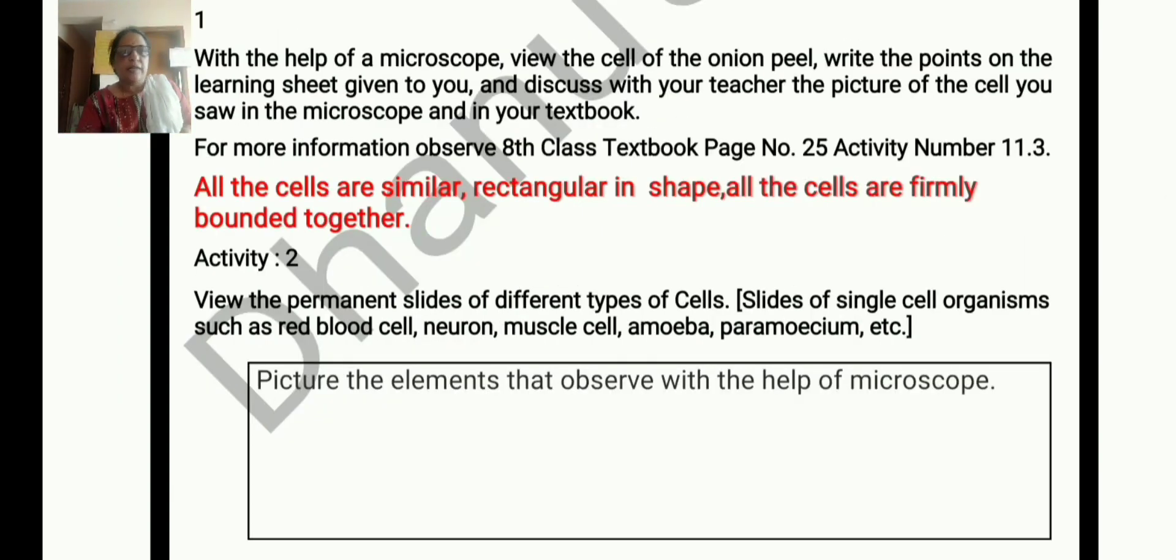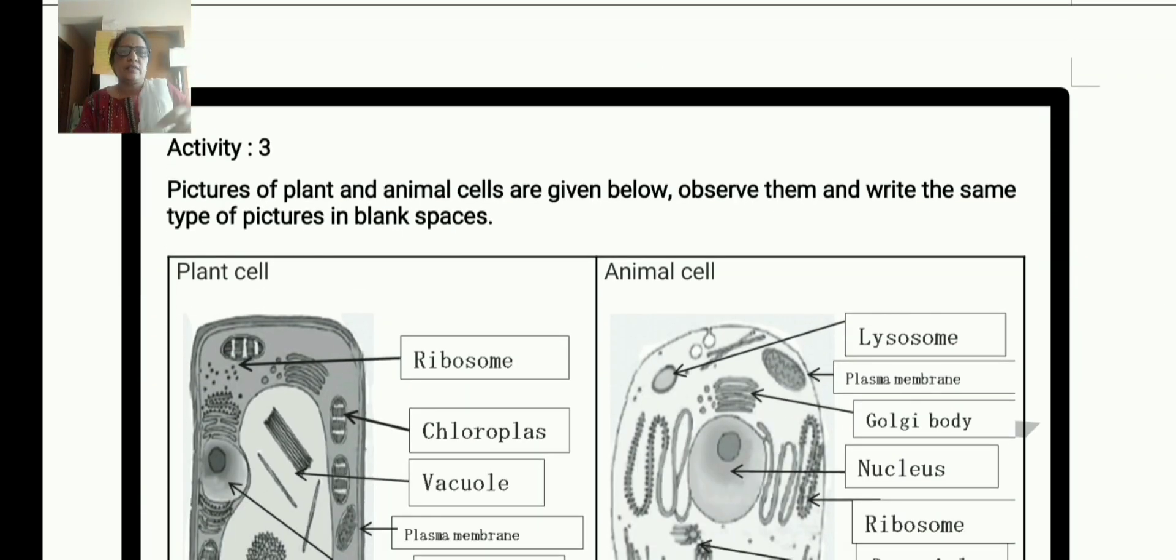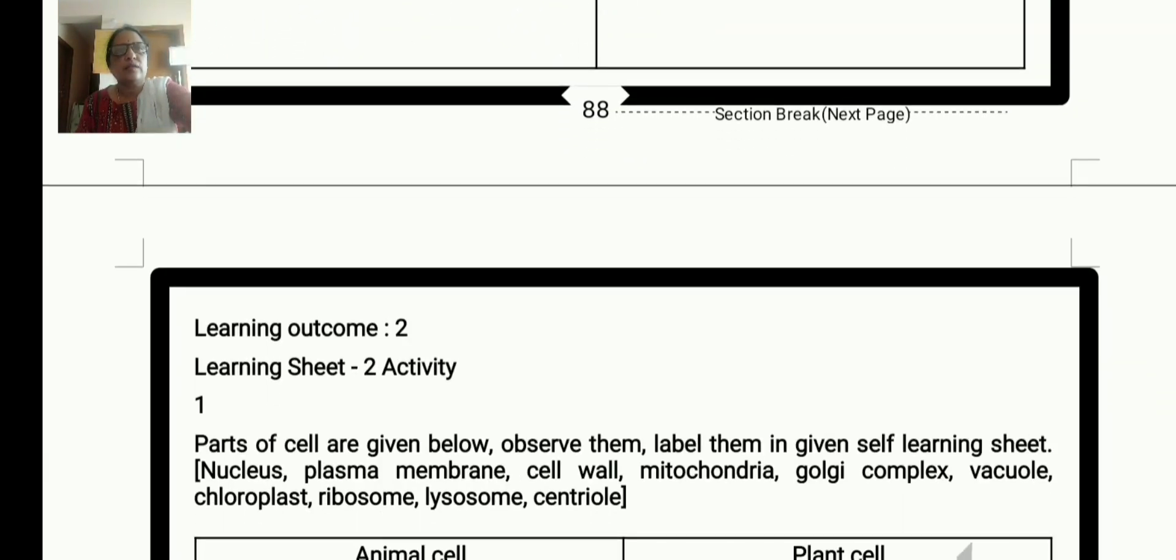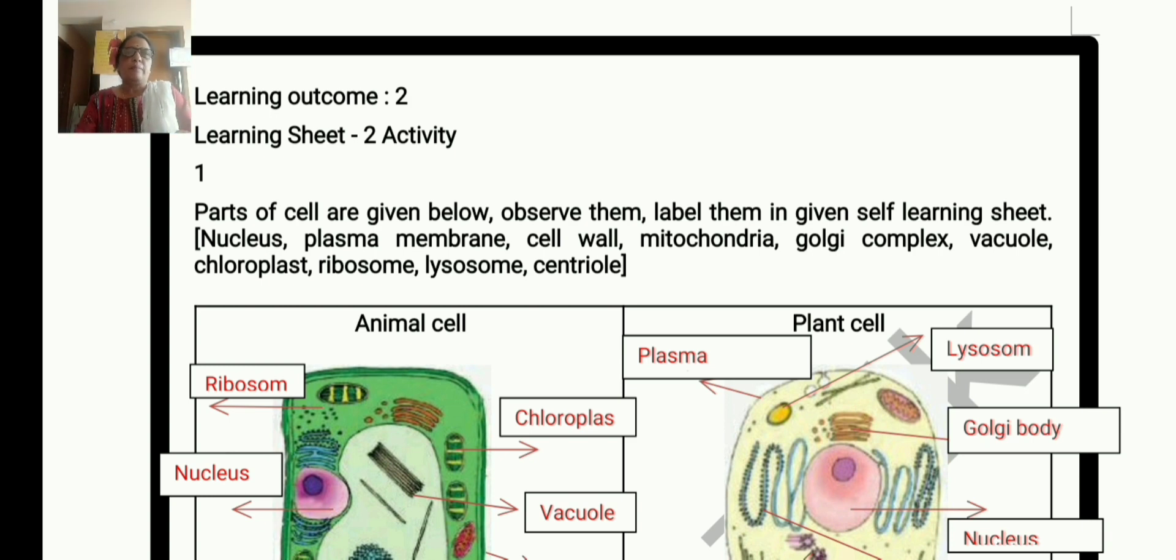Activity 2. View the permanent slides of different types of cells: red blood cells, neuron, muscle cells, amoeba, paramecium, etc. Activity 3. Pictures of plant and animal cells are given below. Observe them and write the same type of picture in blank spaces. So here is the picture.